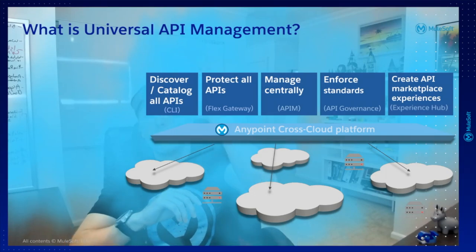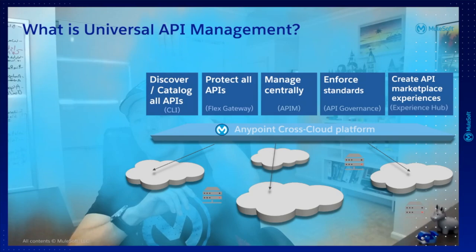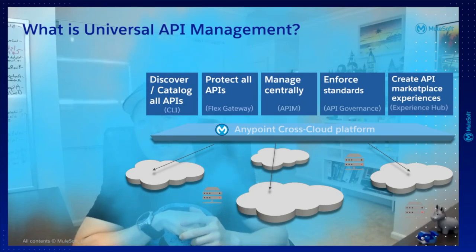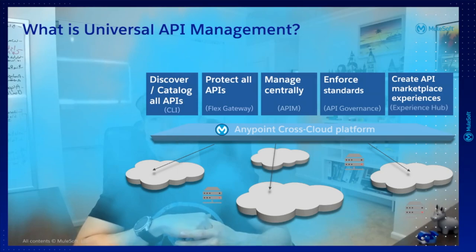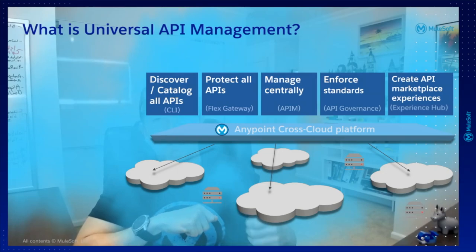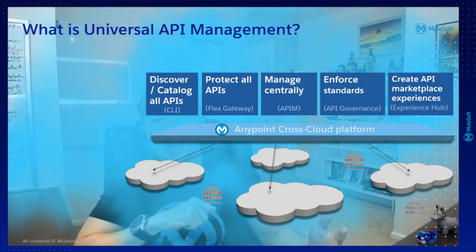The first one is around the discovery and cataloging of all APIs. For this, universal API management is going to provide a CLI that is going to simplify the way in which we can discover and catalog any type of API. Where are we going to catalog them?